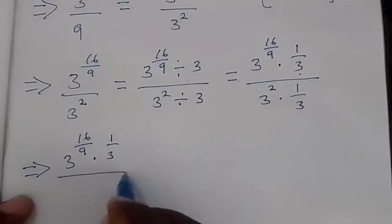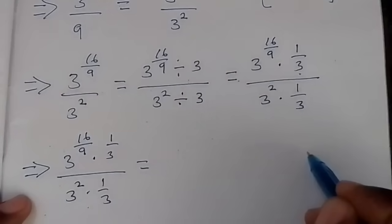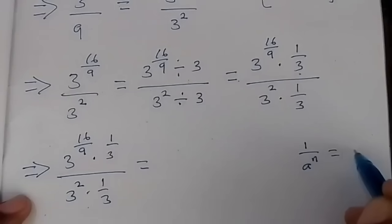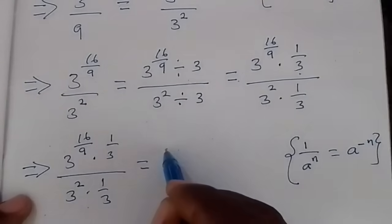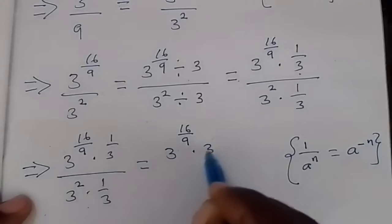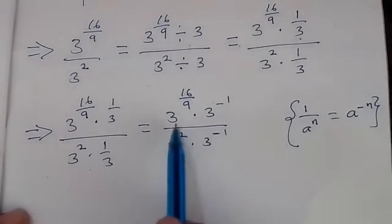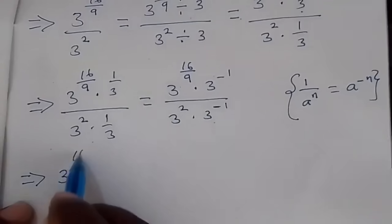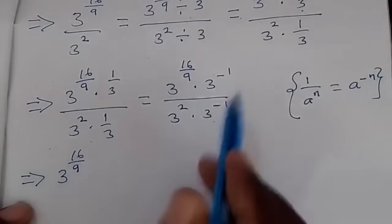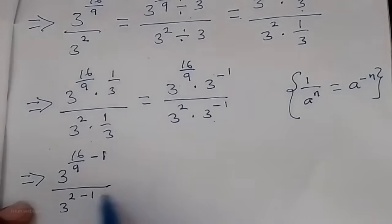This can be written as 3 raised to power 16 over 9 times 1 over 3, over 3 squared times 1 over 3. Since 3 squared times 3 raised to power negative 1 — and since the bases are the same, we add the powers. So next we have 3 raised to power 16 over 9 minus 1 as an exponent, over 3 raised to power 2 minus 1.